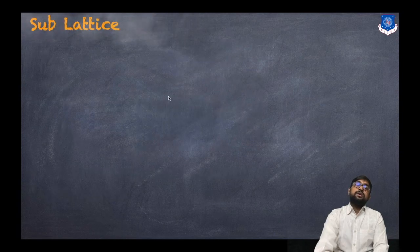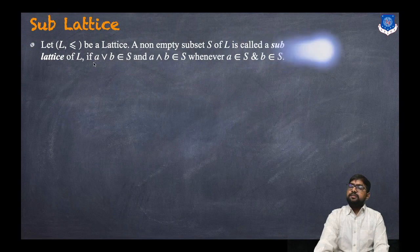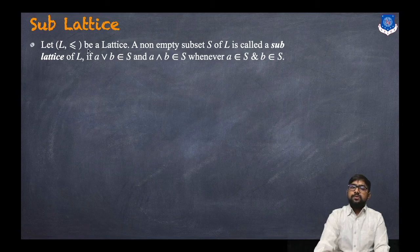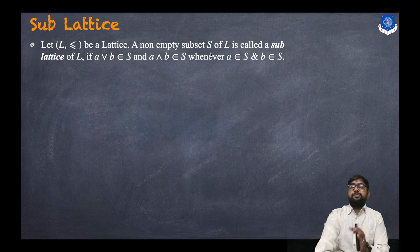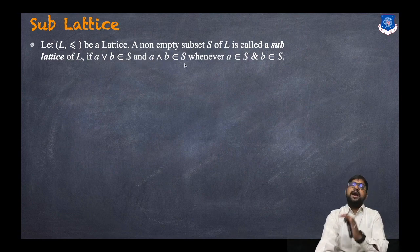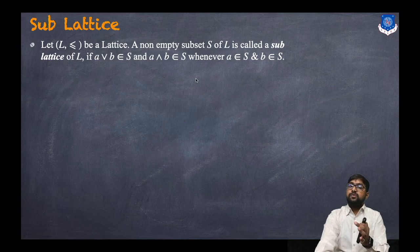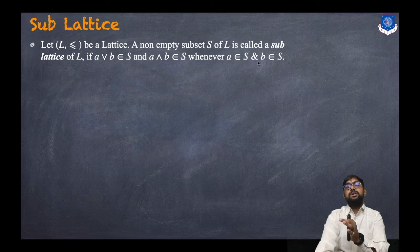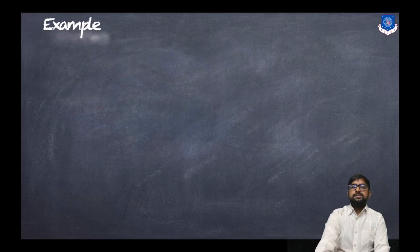Now let us discuss what is a sublattice. The definition: let (L, ≤) be a lattice. A non-empty subset S of L is called a sublattice of L if a ∨ b belongs to S and a ∧ b belongs to S — that means it is closed under join and meet — whenever a belongs to S and b belongs to S.